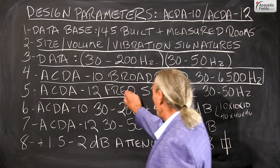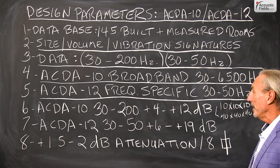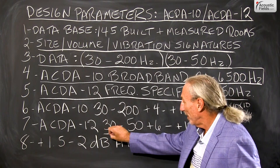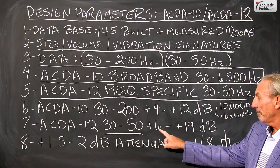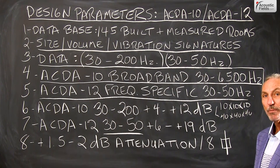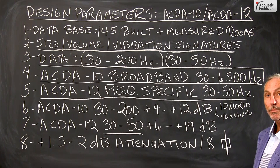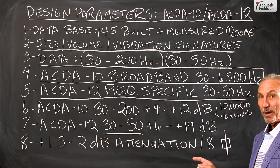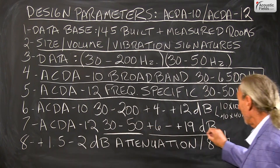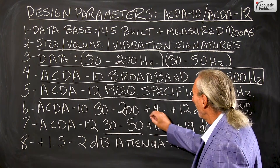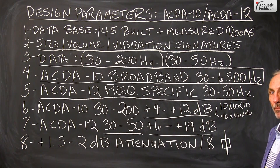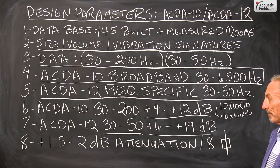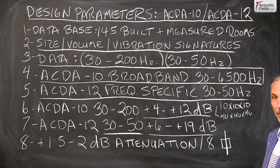With the ACDA12, the 30 to 50 Hz range had to be really powerful because in our database we were seeing plus 6 to plus 19 dB gains over baseline — that's the big bass boom you hear in rooms. We had to have a really powerful sponge to address that. We had a little more flexibility with the ACDA10, targeting plus 4 to plus 12 dB. We didn't get it the first time — it took 12 iterations, about 6 years, and millions of dollars. That's the commitment we made to go after these problems.